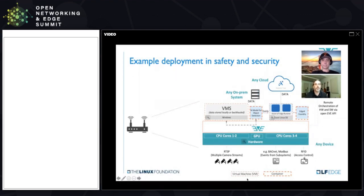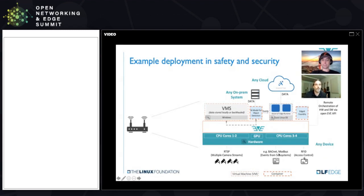It could be license plate recognition, people detection, et cetera. Then send that data on-prem or into the cloud. Maybe you're putting something like Azure IoT Edge next to it, or some sort of protocol conversion service. You can assign to different cores and co-processing elements. It's really about providing that hardware abstraction, making it very easy to deploy and orchestrate hardware and software — any device, any application, any cloud, any on-prem system. EVE becomes that universal abstraction layer.